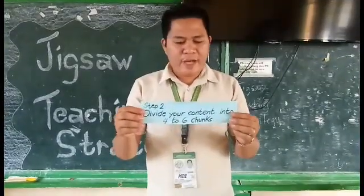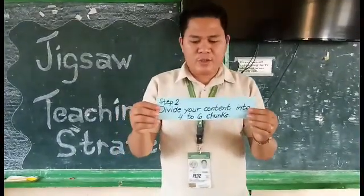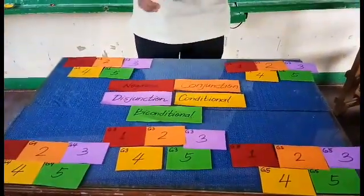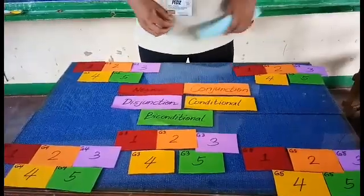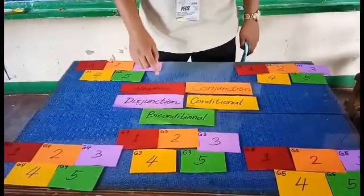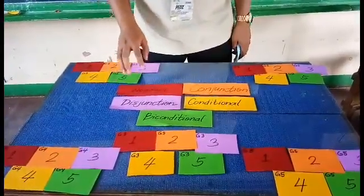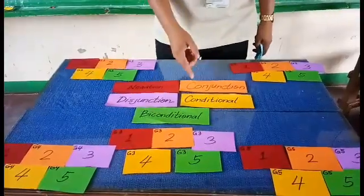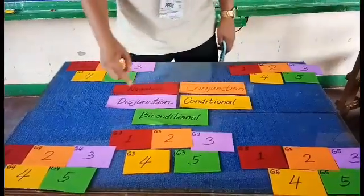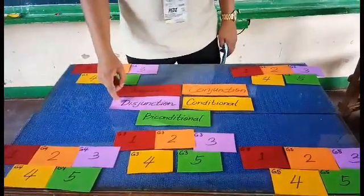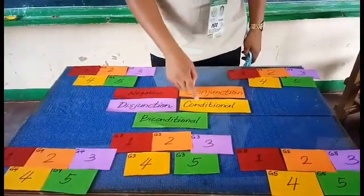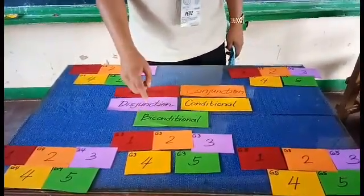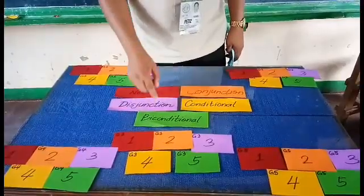Step number two: divide your content into four to six chunks. In my demonstration, I am talking about mathematical logical operators. We have five chunks: chunk one is negation, chunk two is conjunction, chunk three is disjunction, chunk four is conditional, and chunk five is biconditional.